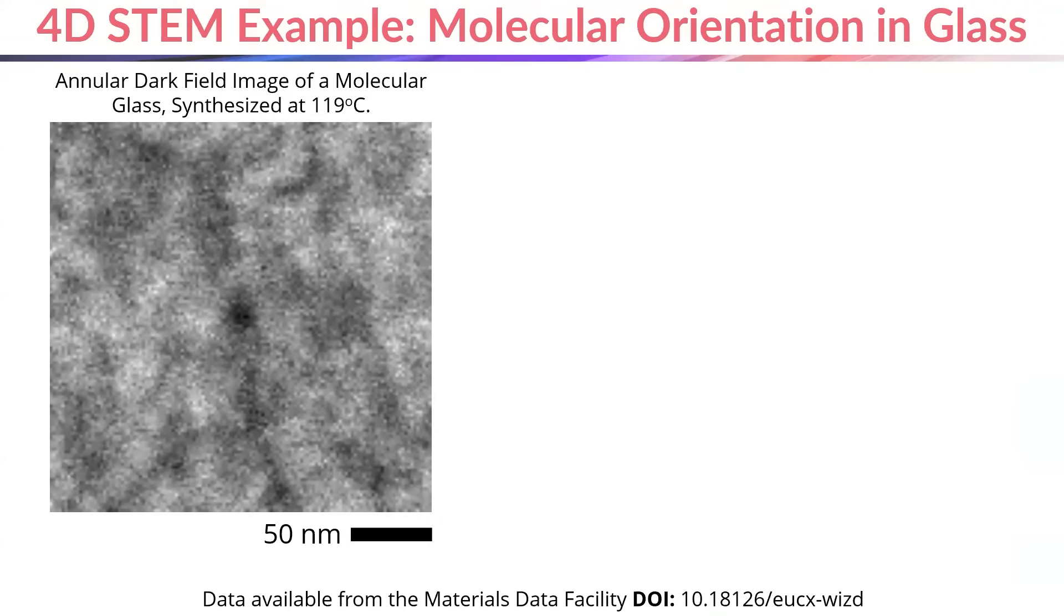First, you can see a more traditional 2D dark field STEM image of the molecular glass material that they were studying. This 2D image has some variations in brightness, but doesn't tell us very much about the material by itself.